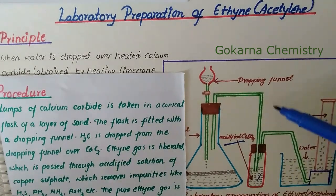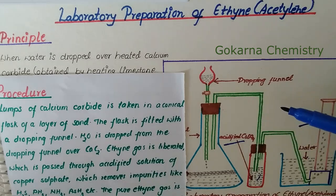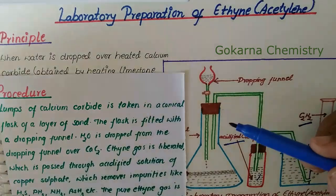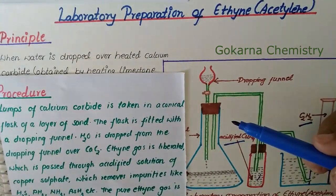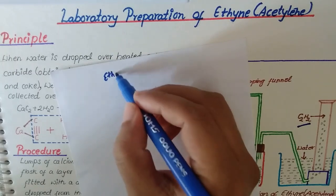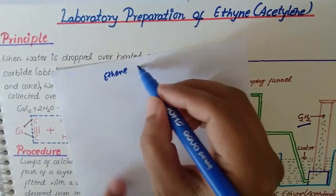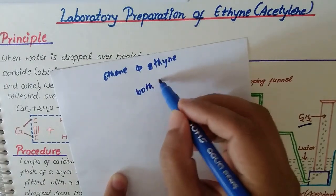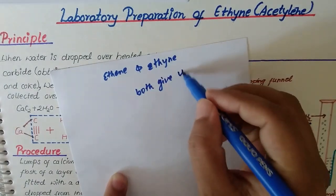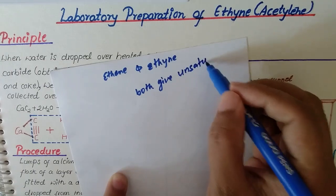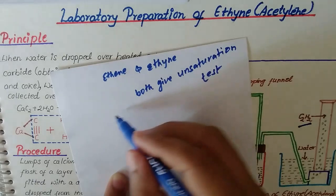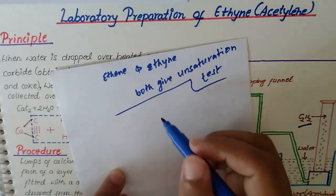In chemical tests, ethyne gives an unsaturation test with potassium permanganate and bromine water. Both ethyne and ethene give an unsaturation test with potassium permanganate (KMnO₄) and bromine water.